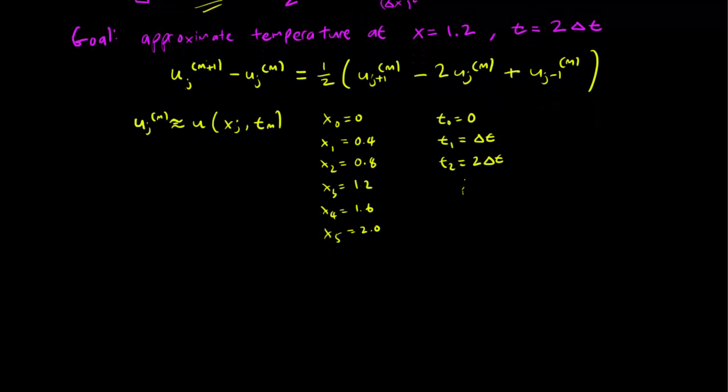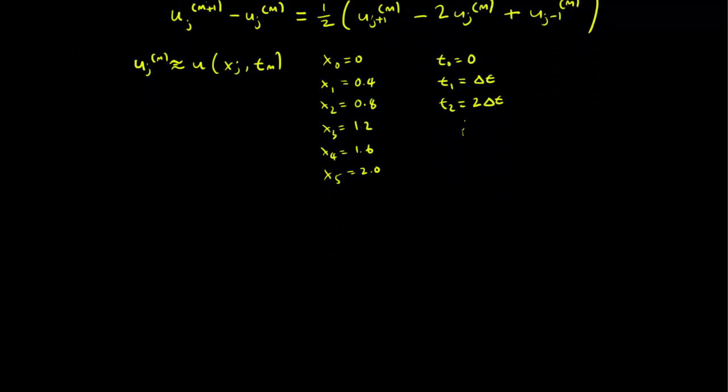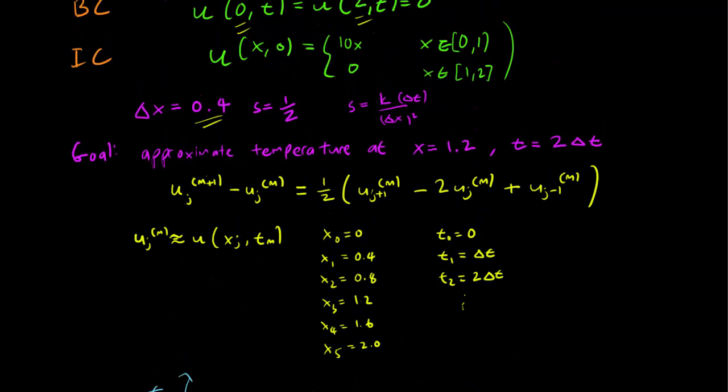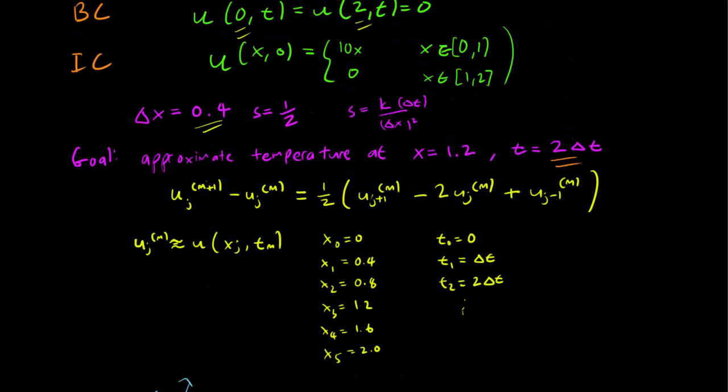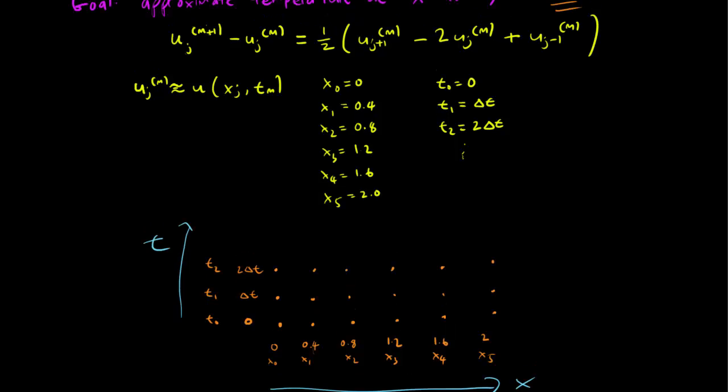All right let's draw the mesh. So our mesh looks like this. So these are the x values x_0 to 0, x_1 to 0.4 and they are spaced 0.4 apart. So let's call this the x-axis. And for the t-axis we have t_0, t_1, t_2 taking the values 0 delta t and 2 delta t respectively. And since our goal is just the approximate temperature at 2 delta t, we can stop right there and we should fill out the other points of the mesh. Here, here, here, here, here. And our goal is to figure out the temperature at x equals 1.2, t equals 2 delta t. And so the point of interest is 1.2, 2 delta t. So we want to figure out temperature at this point.